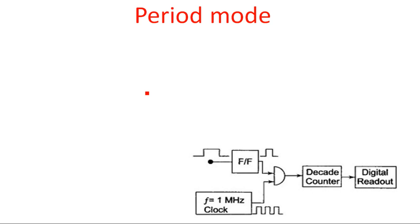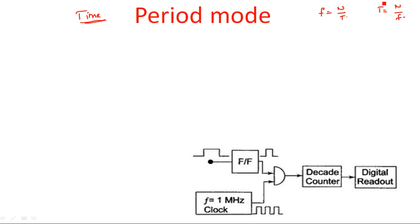The period mode is the time period mode, where we calculate the time period of the signal instead of frequency. In the previous mode we calculated frequency as f equals N divided by T. Here the formula is altered to T equals N divided by F to get the time period. Sometimes it is required to measure the time period, and sometimes the frequency — depending upon the requirement.